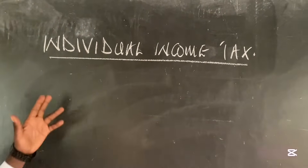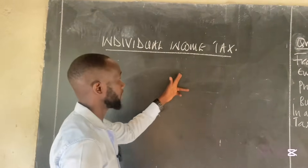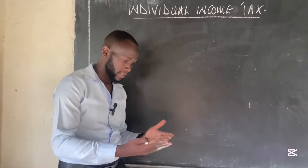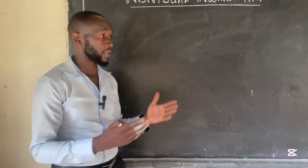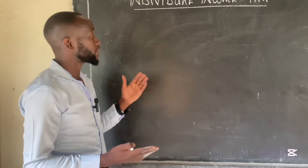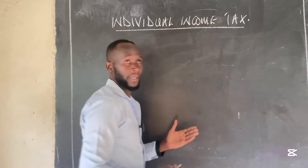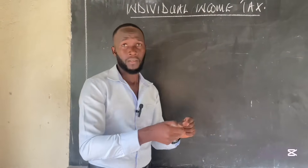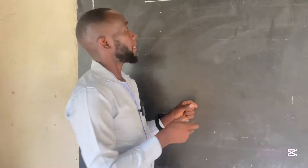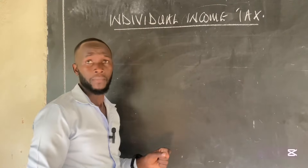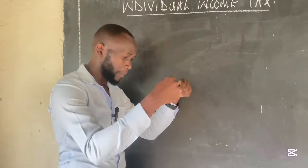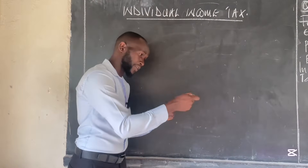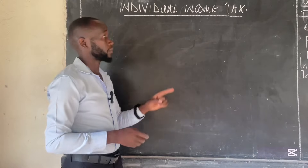Today we are looking at individual income tax. We've normally asked ourselves: how best can we know the amount of tax an individual pays in a given period of time for the tax collection authorities? We calculate what we call income tax. Income tax is a tax that is imposed on a person's chargeable income at specific rates for a given period of time.